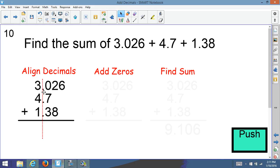So here are our numbers, 3.026, 4.7, 1.38. So notice I have all the decimals lined up straight in order. So that's my first step.